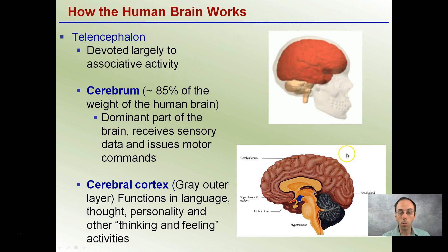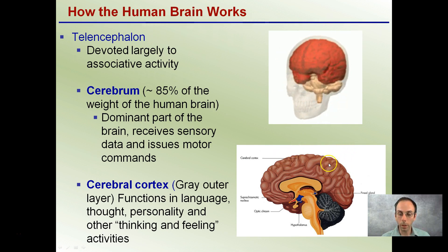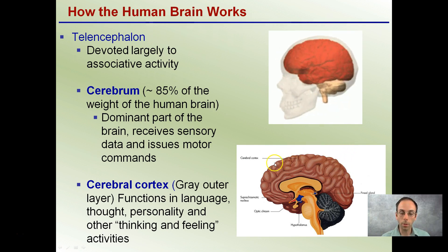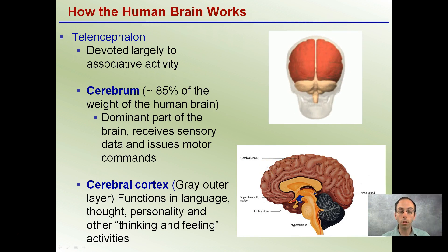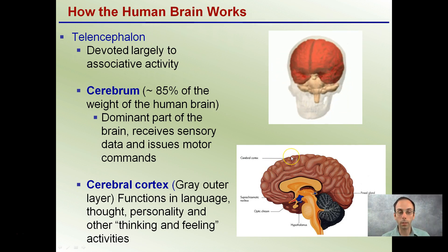The cerebral cortex is the gray outer layer, kind of hidden in this region, and functions in language, thought, personality, and other thinking and feeling activities.